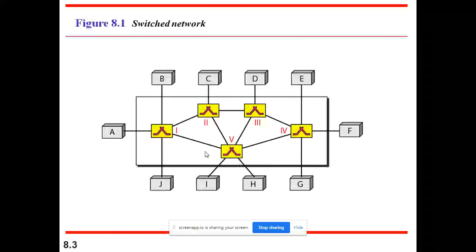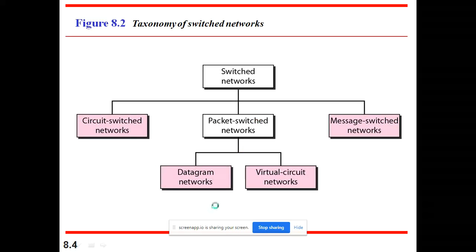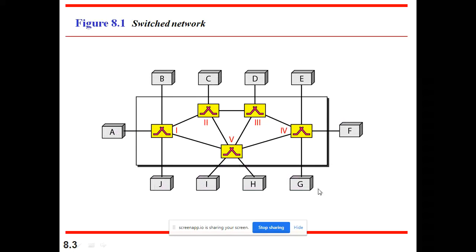Before going to this diagram, let me see. Switching network consists of a series of interlinked nodes called switches. Switches are devices capable of creating temporary connections between two or more devices linked to the switch. In the diagram, we can observe D, A, B, C, D, E, J, I, H, E. These are all the end systems.